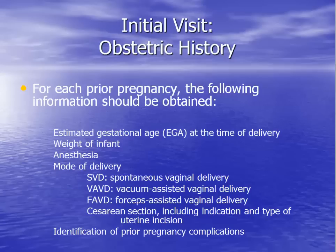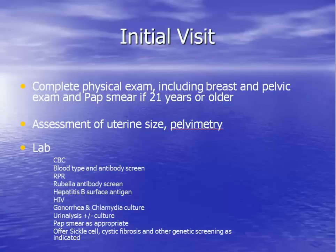Important components of the patient's history are listed here. It is important to take a detailed obstetric history from your patient because health conditions that occurred in a prior pregnancy often repeat themselves in future pregnancies. After the initial patient history has been collected and reviewed, a comprehensive physical examination is performed along with the laboratory tests listed here. Special attention should be paid to the uterine size for correlation with estimated gestational age.